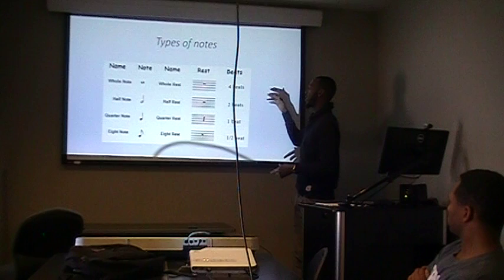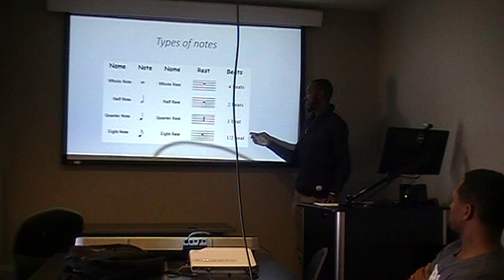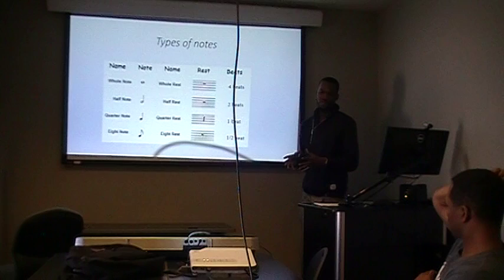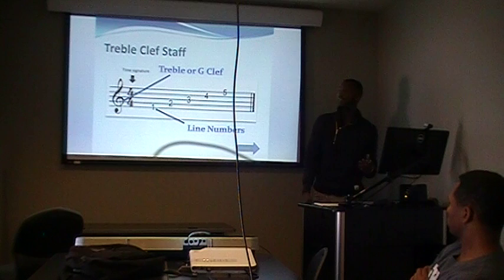A half rest is the exact opposite — it's on top of the line and is just two beats. Usually if you see a half rest, it has one or two notes surrounding it. The sign that kind of looks like a hand sign is a quarter rest, which is one beat. And the eighth rest means you don't play anything for an eighth of a beat.